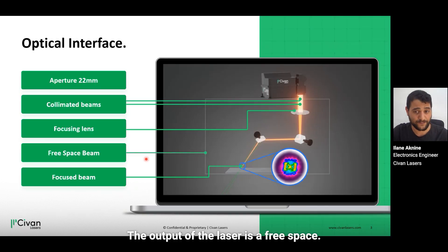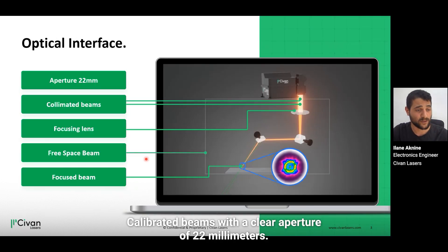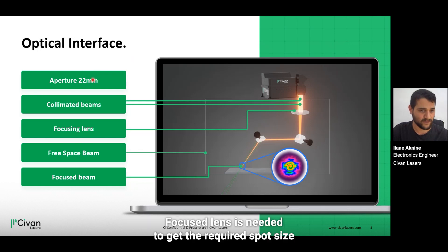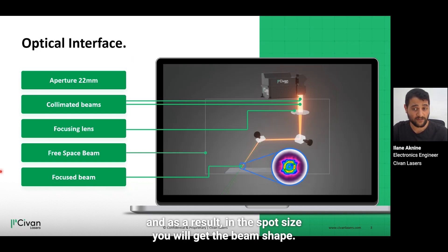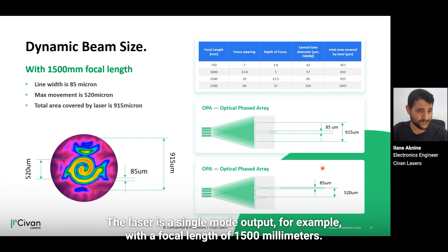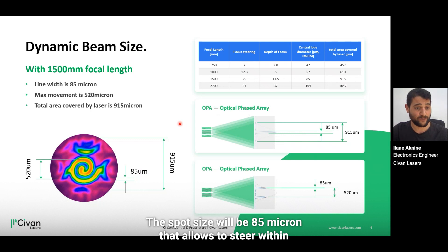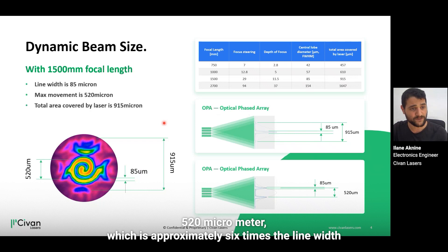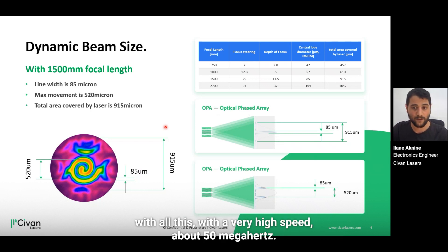The output of the laser is a free-space collimated beam with a clear aperture of 22 millimeters. A focus lens is needed to get the required spot size, and as a result, you will get the beam shape in the spot size. The laser is a single-mode output. For example, with a focal lens of 1500 millimeters, the spot size will be 85 microns, allowing you to steer within 520 micrometers, which is approximately six times the line width — all at a very high speed of about 50 megahertz.